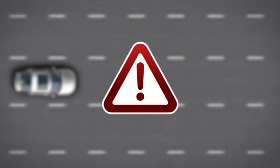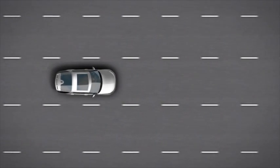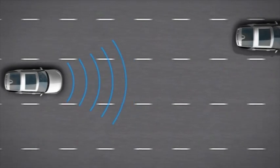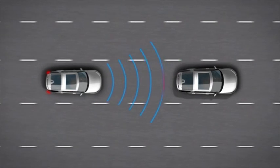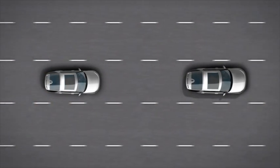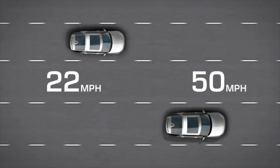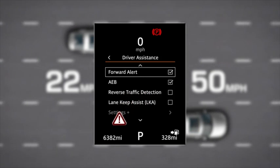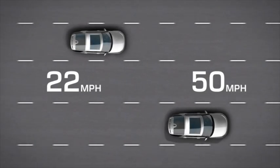AEB automatically switches on every time the vehicle's ignition is switched on. The system operates when the vehicle is moving between 3 miles per hour and 50 miles per hour. If the vehicle detects an imminent risk of collision with the vehicle travelling in front, it is designed to automatically apply the brakes. If the vehicle's speed is between 22 miles per hour and 50 miles per hour, AEB warning messages are designed to display in the message centre, just before the brakes are automatically applied.